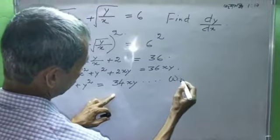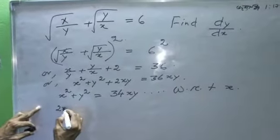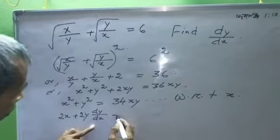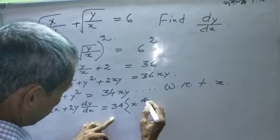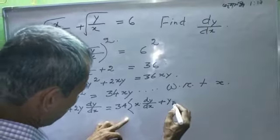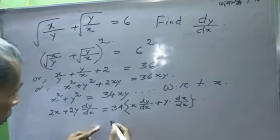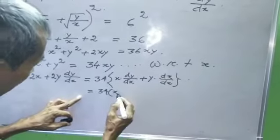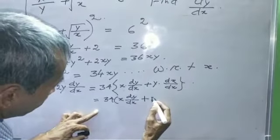Now, differentiating with respect to X: 2X plus 2Y DY by DX equals 34 into X into DY by DX plus Y into DX by DX, which gives 34X DY by DX plus 34Y.